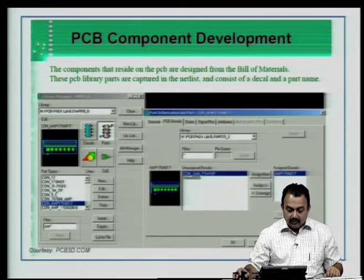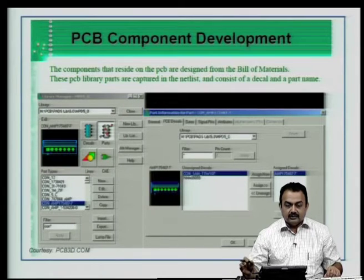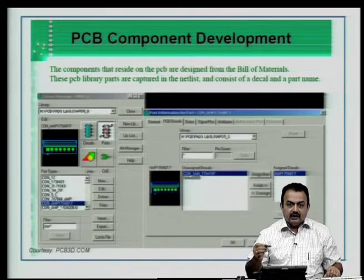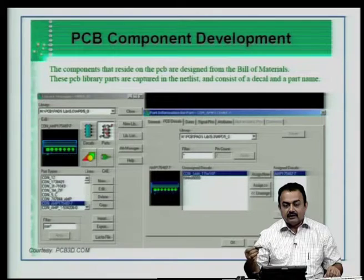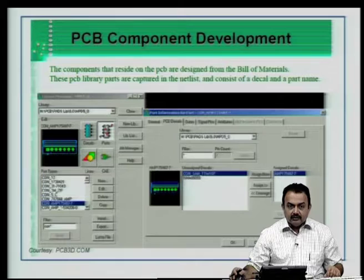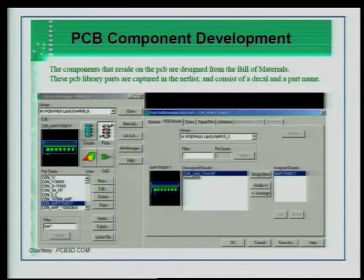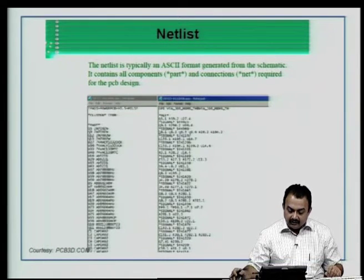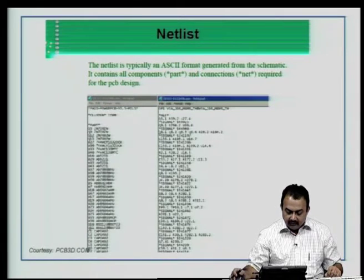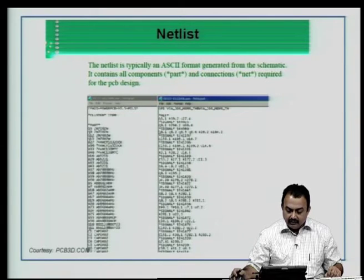In PCB component development, the components that reside on the PCB are designed from the bill of materials. These PCB library parts are captured in the net list. From the schematic, you are generating a net list, and this net list — with all information about the component, the footprint, and so on — is used in the layout as well as the routing stage. The net list is typically an ASCII format file generated from the schematic. It contains all component and connection details — the part and net information required for the PCB design.